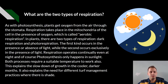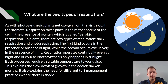What are the two types of respiration? As with photosynthesis, plants get oxygen from the air through stomata. Respiration takes place in the mitochondria of the cell in the presence of oxygen, which is called aerobic respiration. In plants there are two types of respiration: dark respiration and photorespiration. The first kind occurs in the presence or absence of light, whilst the second occurs exclusively in the presence of light.